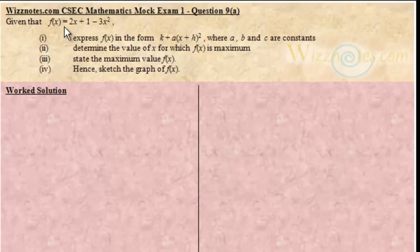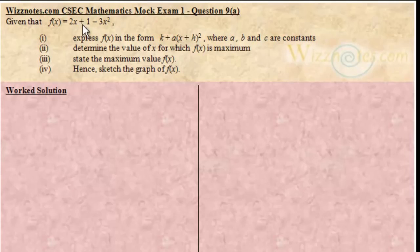Now f of x is a quadratic function, and how we know it is a quadratic function is that the highest power or the highest order of the variable term, which is x, is a square. There is an x squared in this function, hence it is a quadratic function. And since we have been asked to write it in this form, this is a perfect square — hence we are being asked to complete the square.